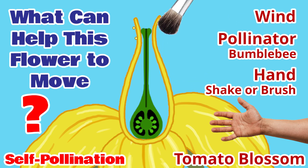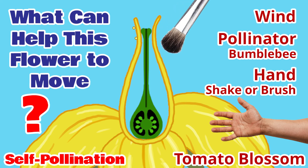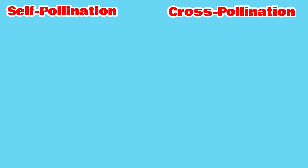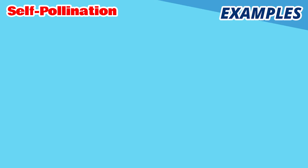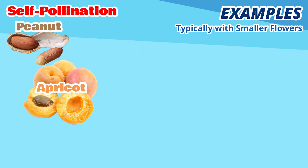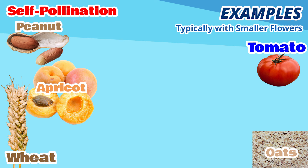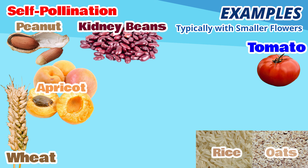Imagine having to shake or brush every single tomato blossom by hand — that would be a lot of work, especially to grow a lot of tomatoes. What are some examples of self-pollinating flowers? These are typically plants with smaller flowers. This includes peanuts, apricots, tomatoes — though we just learned the challenges with tomatoes self-pollinating — wheat, oats, rice, and beans.